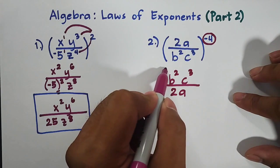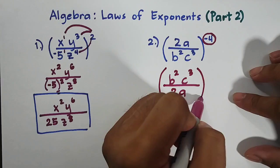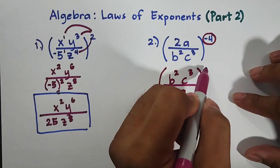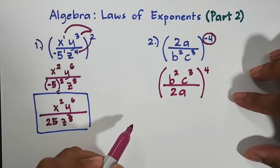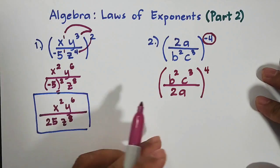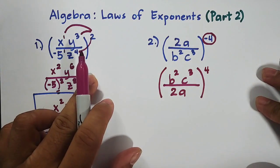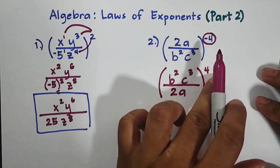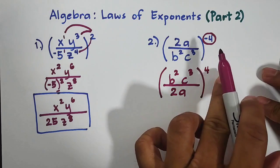And this exponent negative 4 will remain outside, but it is now positive. Okay? So same process with example number 1, we need to multiply or distribute the exponent outside the parentheses.